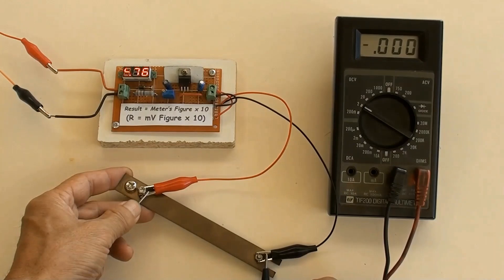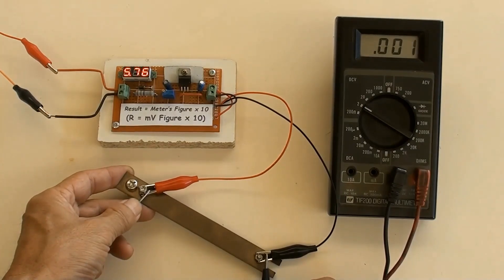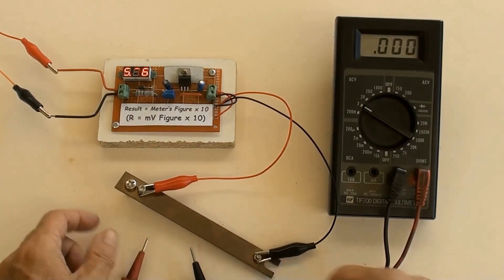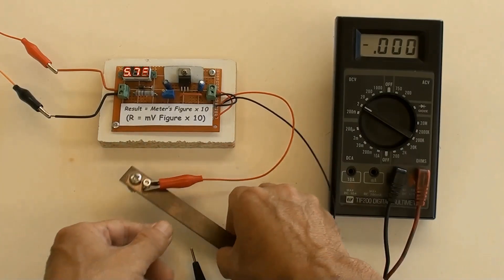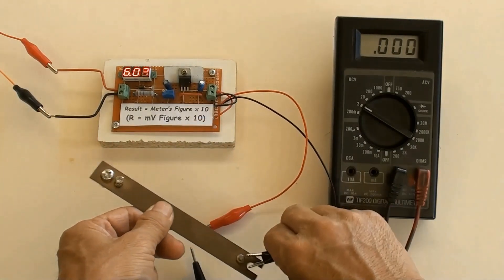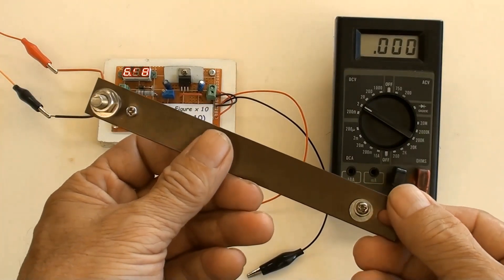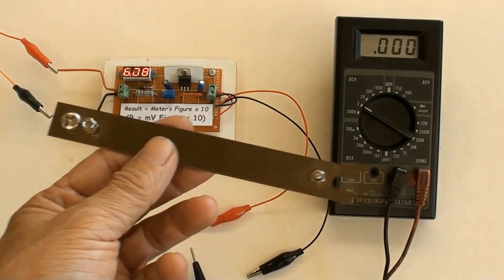Measuring this shunt. Multimeter indicated 0.001 volt or 1 millivolt, then using formula on the sticker, 10 times equals 0.01 ohm, in other words, 10 milliohms. So this shunt is 10 milliohms.